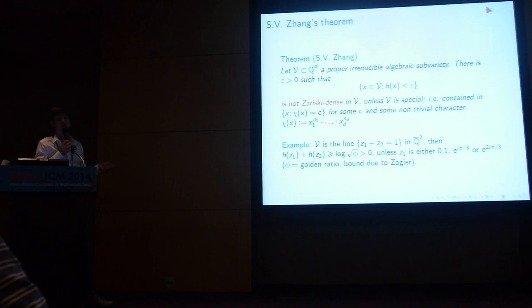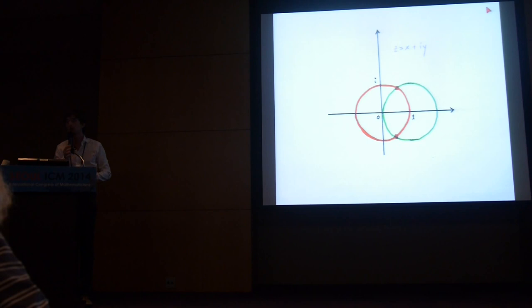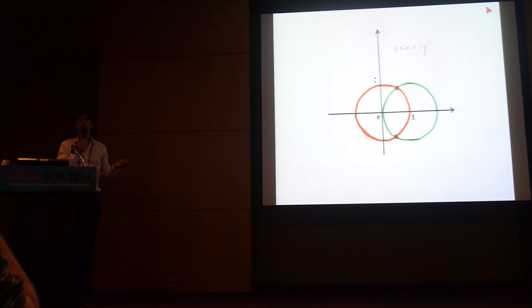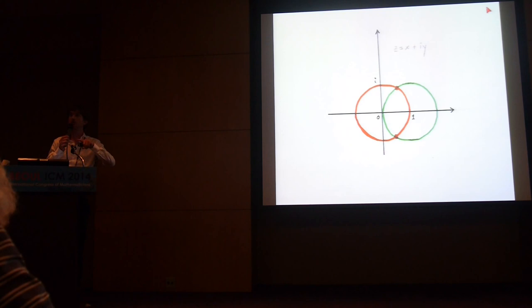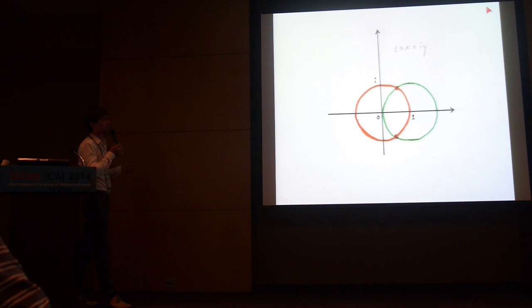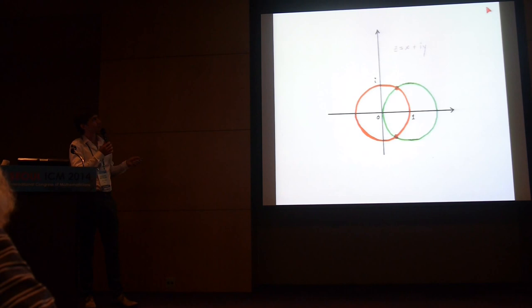Let me show an example. If you have z_1 + z_2 = 1 — a line in the plane — I claim there are only finitely many points on it with small height. In fact, there is a bound due to Zagier in this case: unless z_1 is one of four specific numbers, the height is large. This theorem is a consequence of Bilu's theorem.